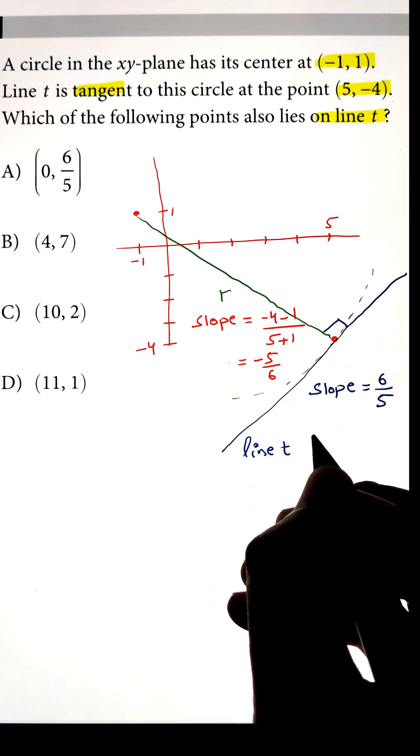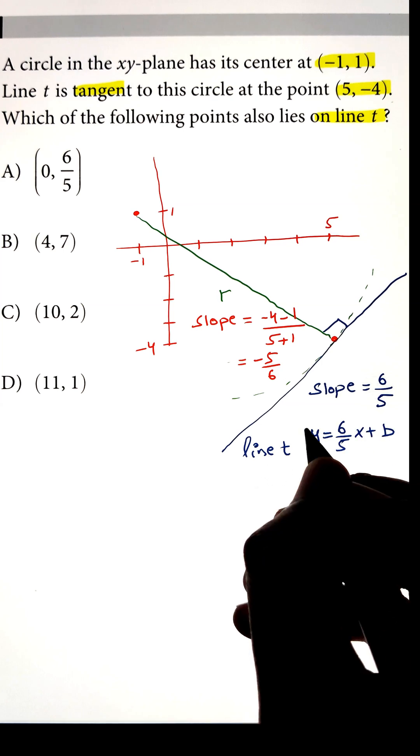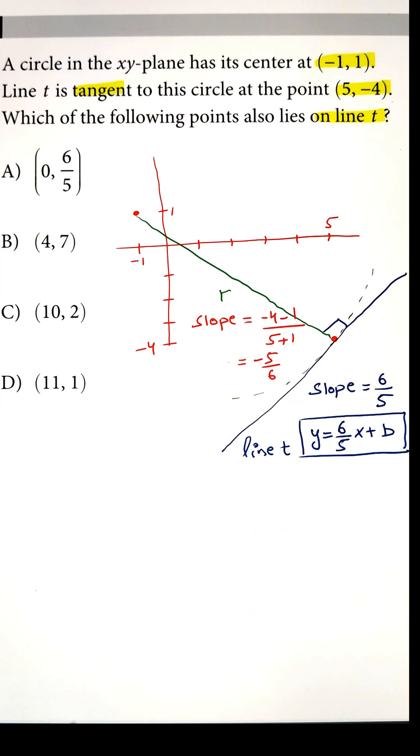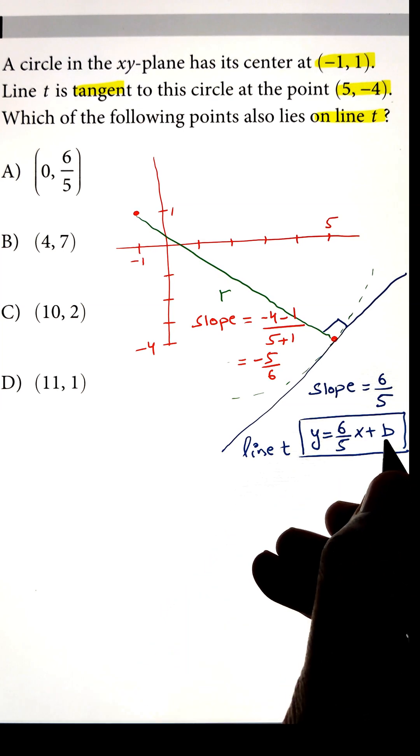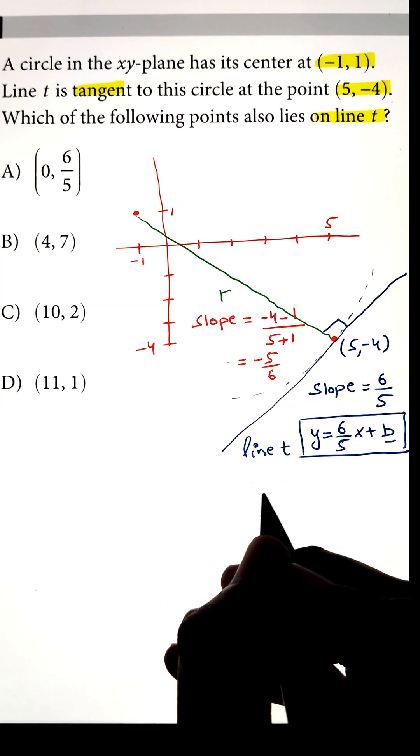Once we have the slope, we can calculate the intercept to write the equation of line t, which comes out to y equals (6/5)x minus 10.